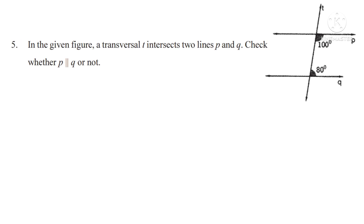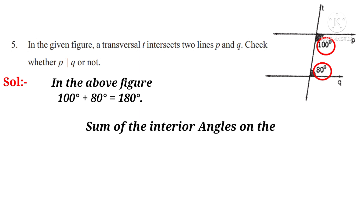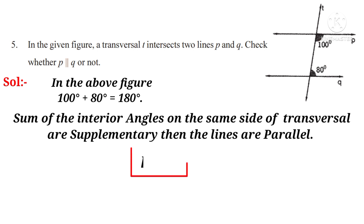Problem 5. In the given figure, T is a transversal intersecting two lines P and Q. Check whether P is parallel to Q or not. Solution: From the figure, 100 plus 80 degrees equals 180 degrees — the sum of interior angles on the same side of the transversal is supplementary, so the lines are parallel. Therefore P is parallel to Q.